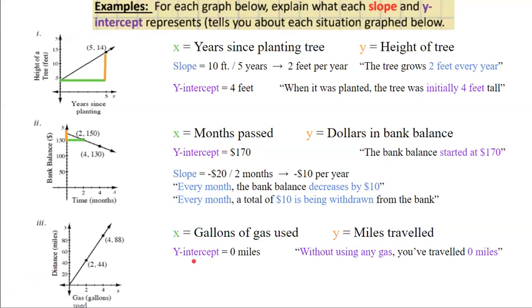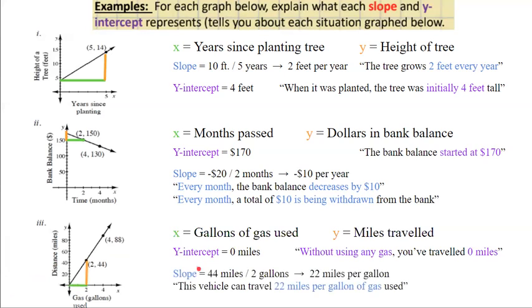If we determine our slope as well, 44 miles for every two gallons of gas used, or 22 miles per gallon, we can say that our slope represents that this vehicle can travel 22 miles per gallon of gas.